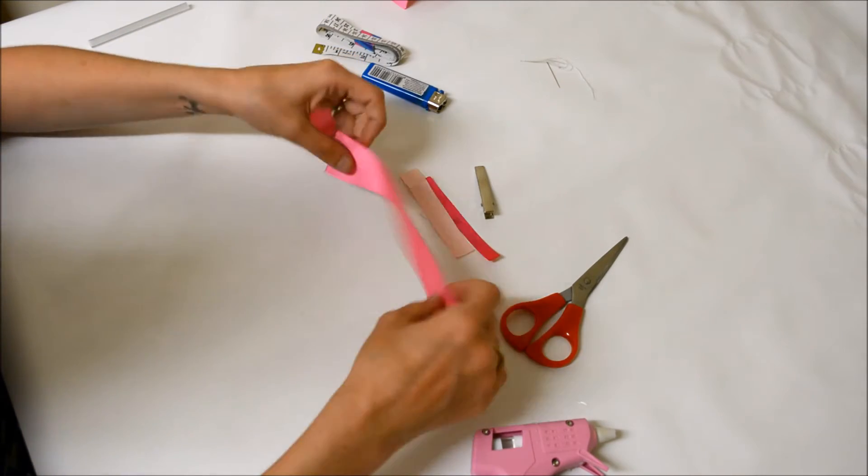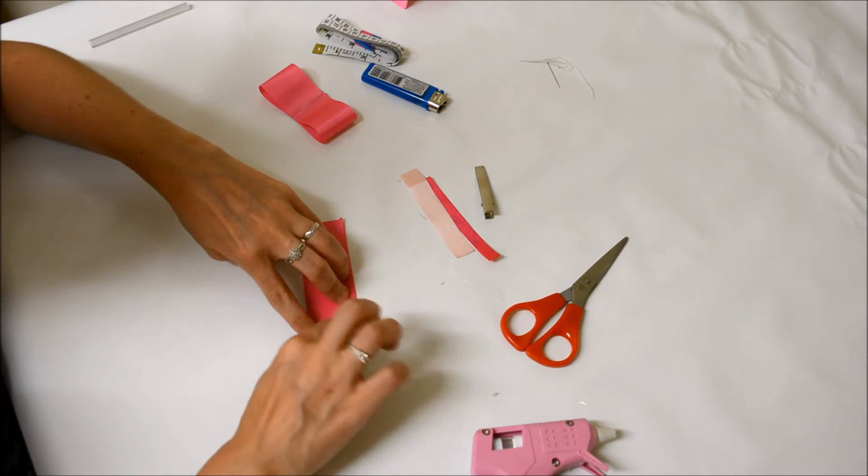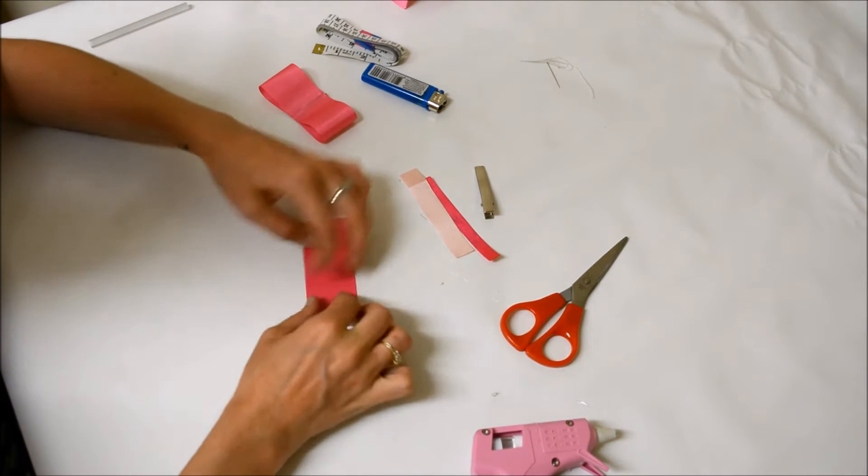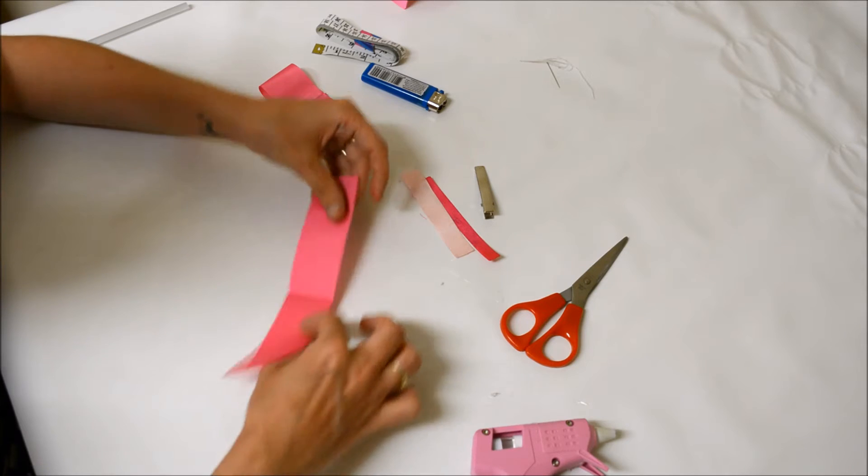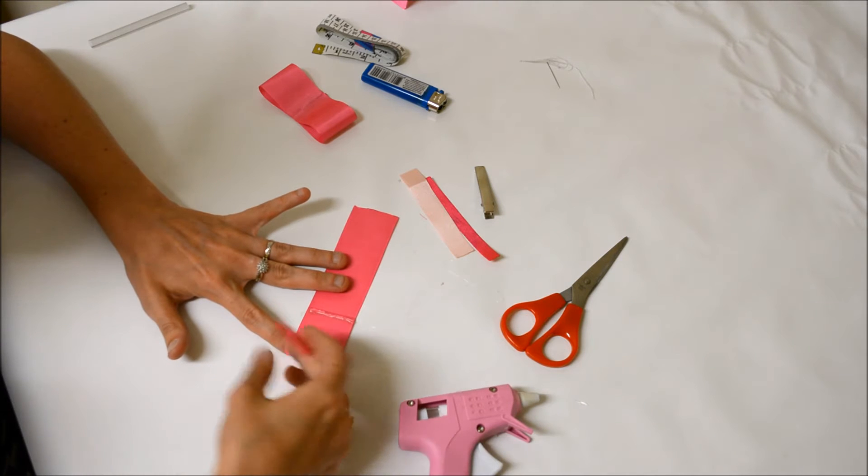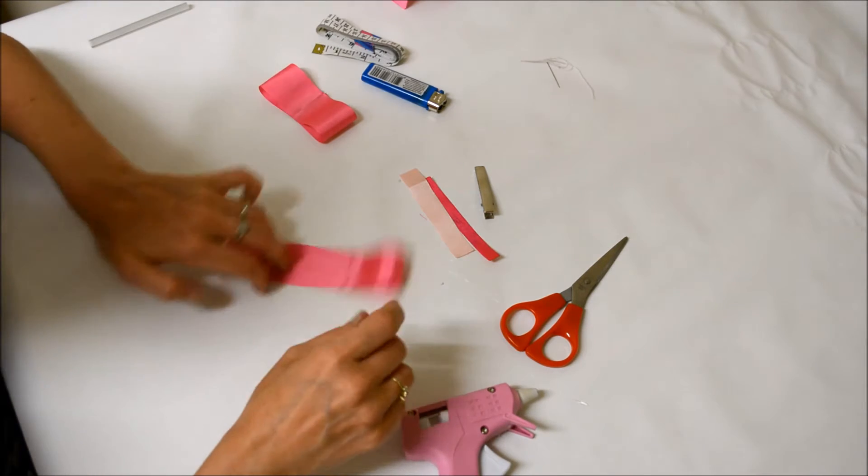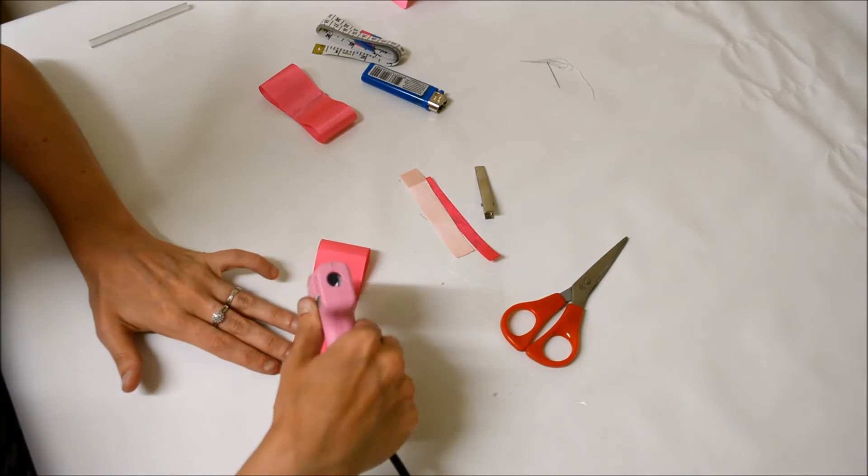Now you want to put that to one side and do exactly the same with your other ribbon. Fold it in half to make a nice crease, place a line of glue along the crease. Fold the edge to the center and push down. And the same for the other side.